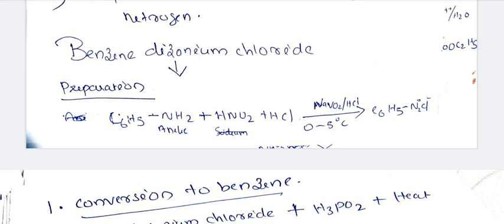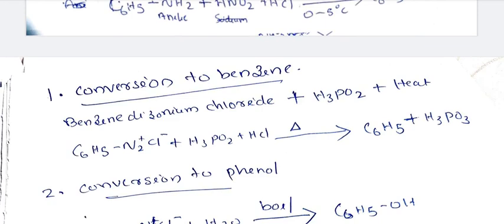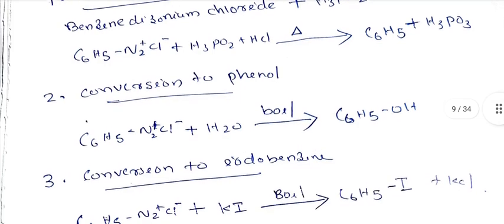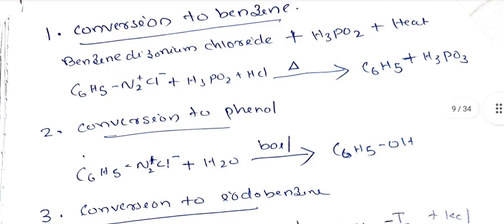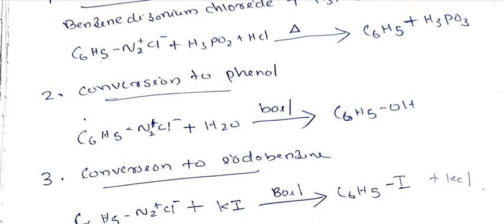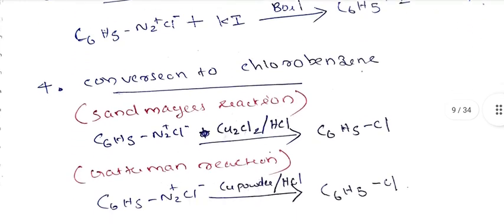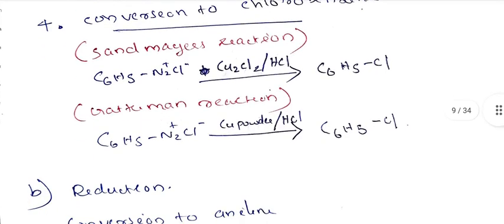We use benzene diazonium chloride for various conversions. Treatment with H3PO2 yields benzene itself. Treatment with H2O gives phenol (introducing OH). Conversion to chlorobenzene and iodobenzene uses Cu2Cl2/HCl — that is the Sandmeyer reaction. Gattermann reaction uses copper powder. Reduction gives aniline using a strong reducing agent.